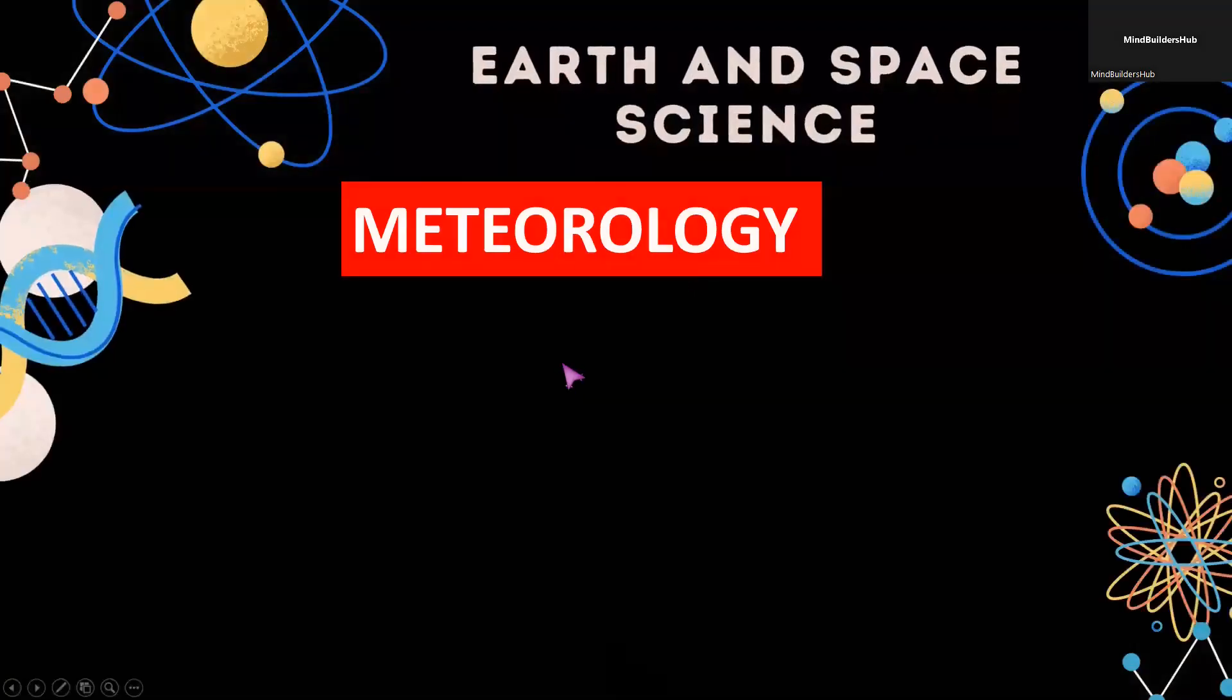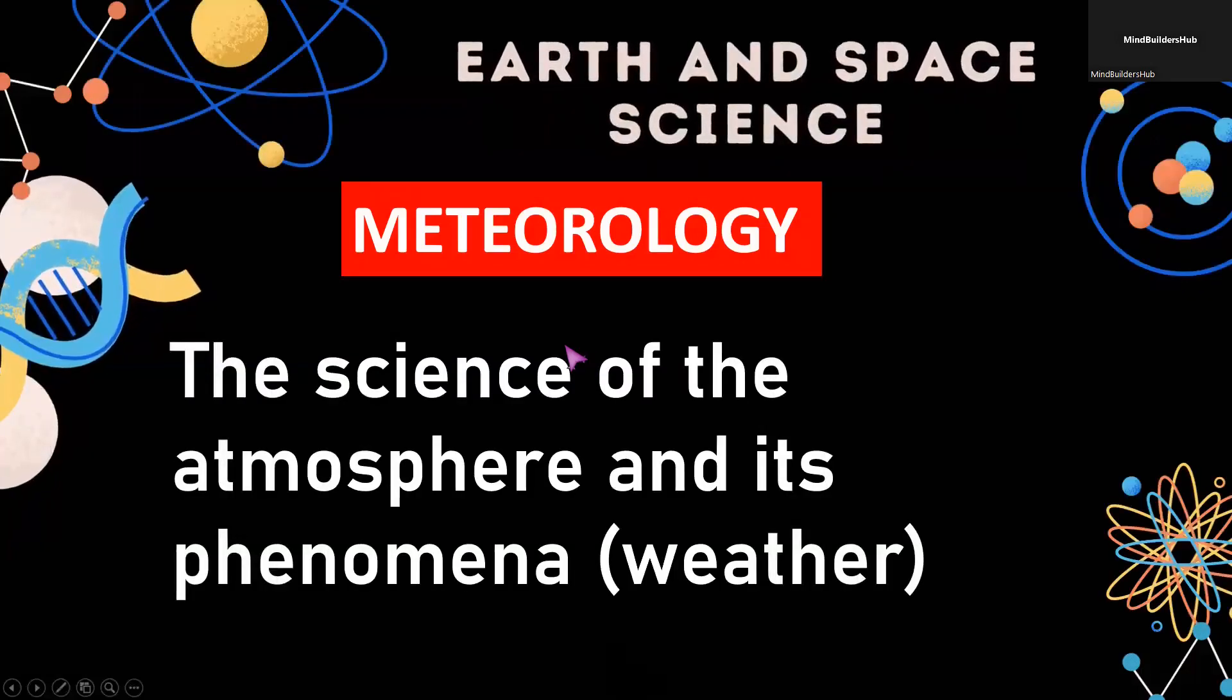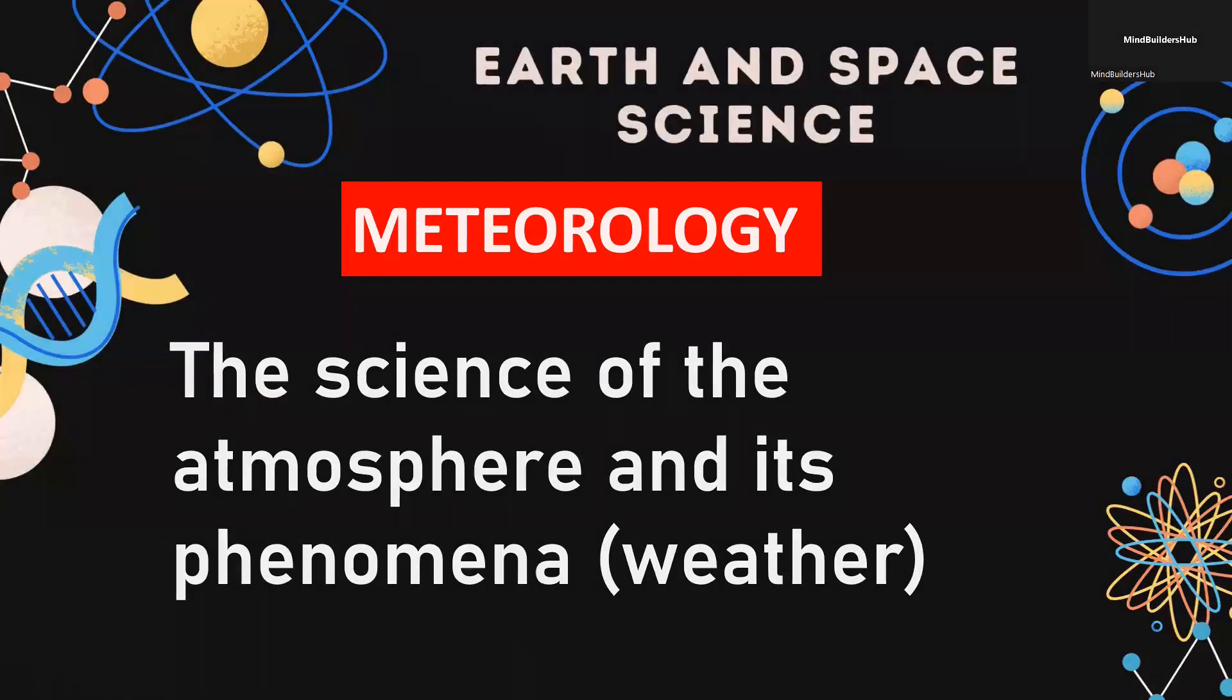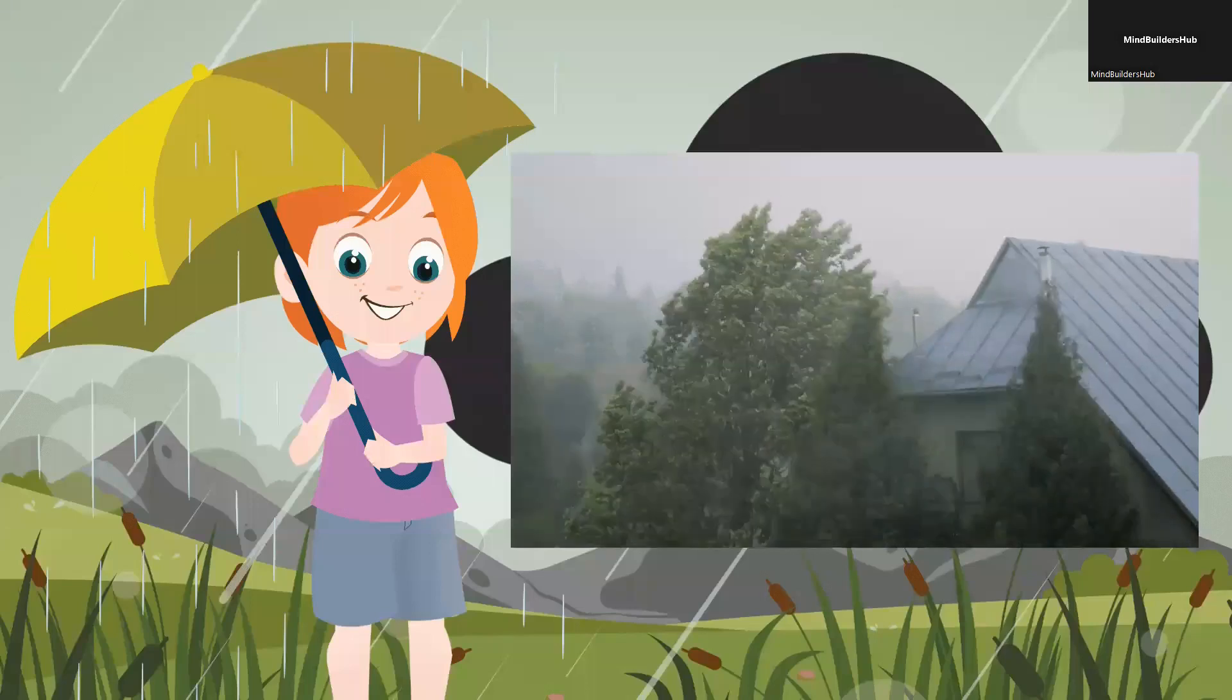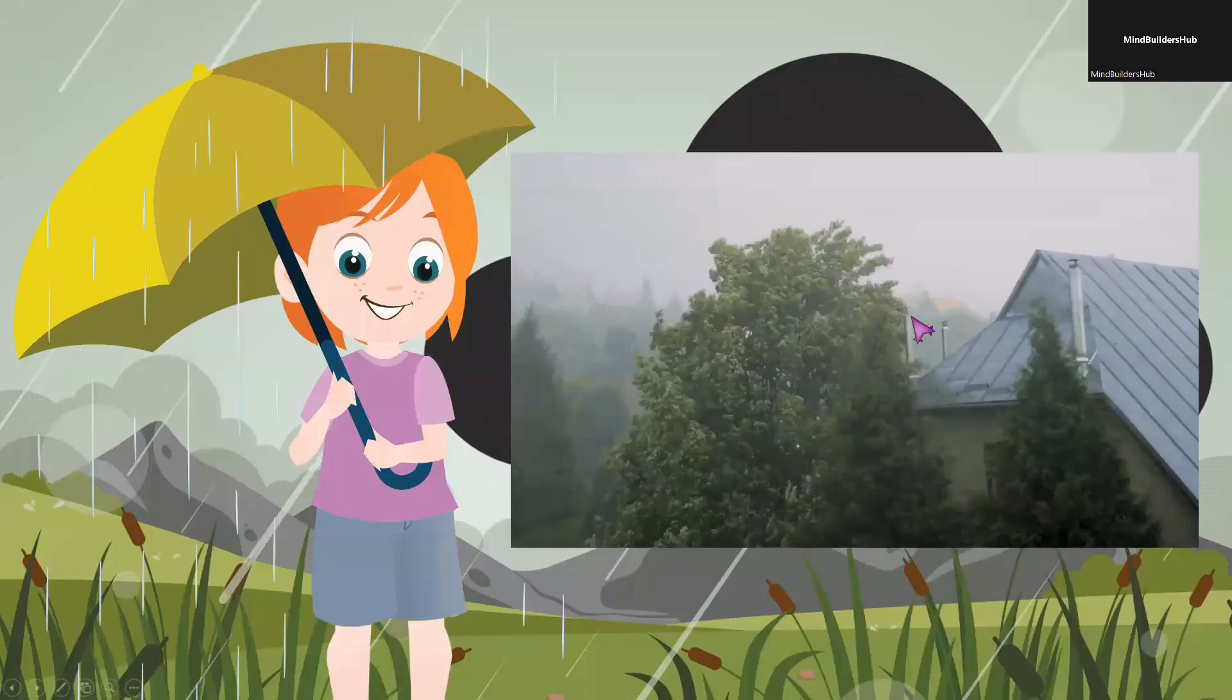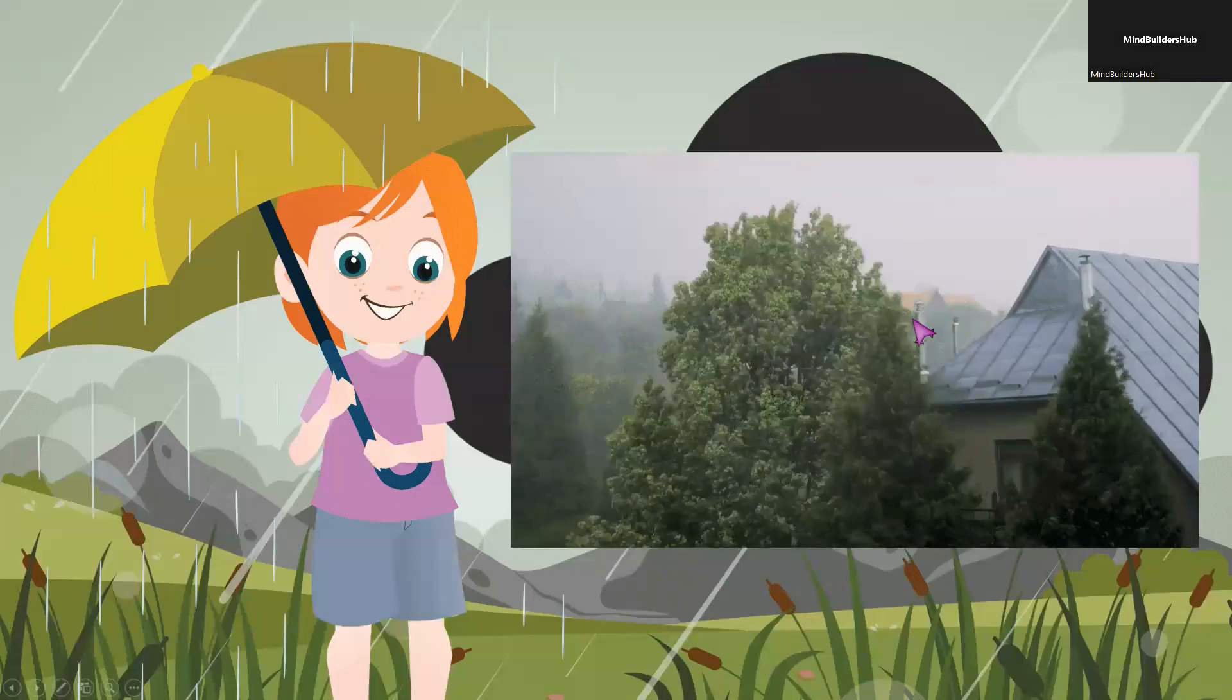In meteorology, it doesn't have to do with meteor, but rather, it has something to do with our atmosphere and some phenomenons that are happening in our atmosphere, focusing on the weather. Therefore, it includes the study of typhoon and other weather disturbances that happen in our atmosphere. You may also encounter us discussing the different layers of our atmosphere, their characteristics, and properties.